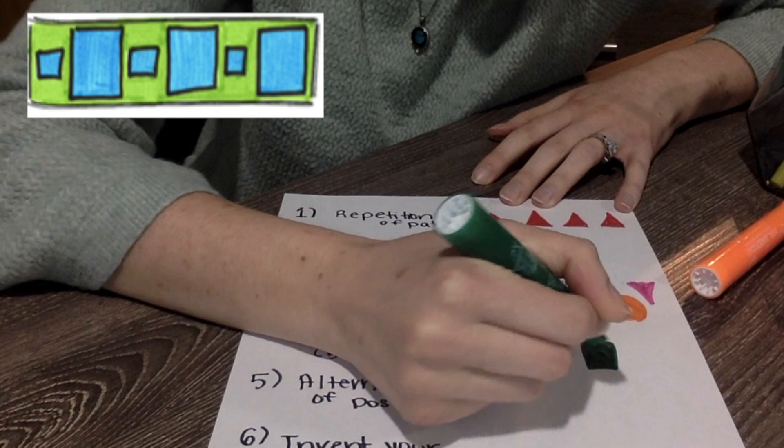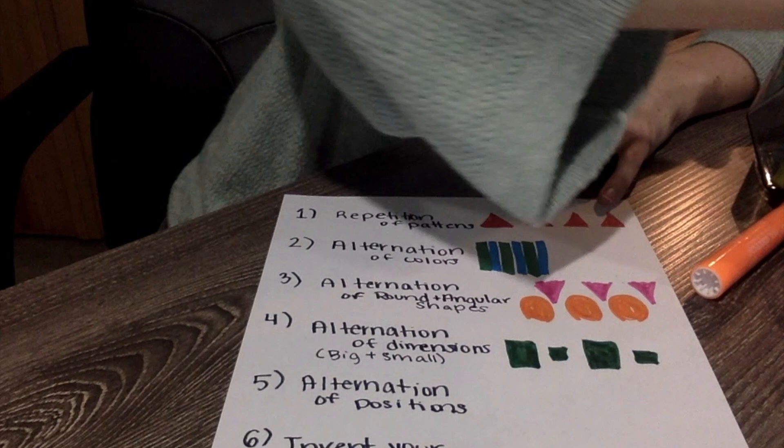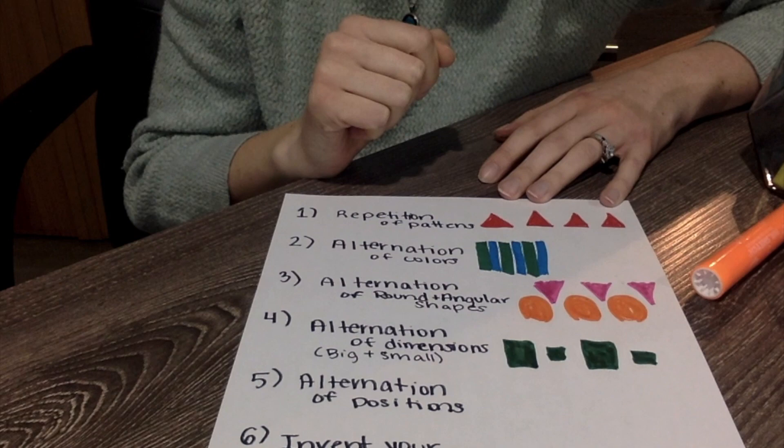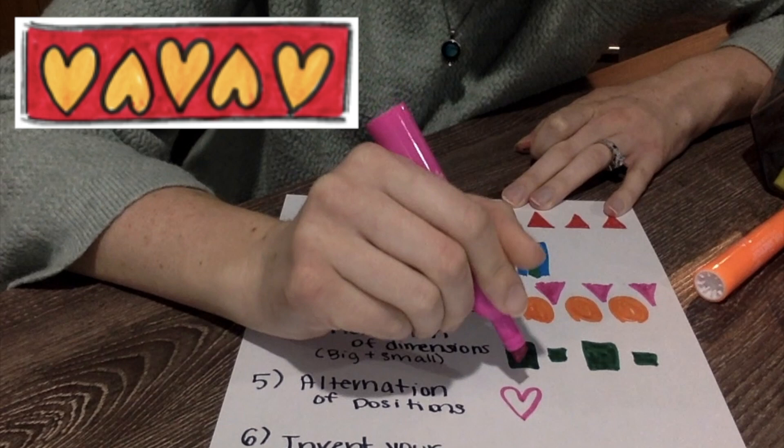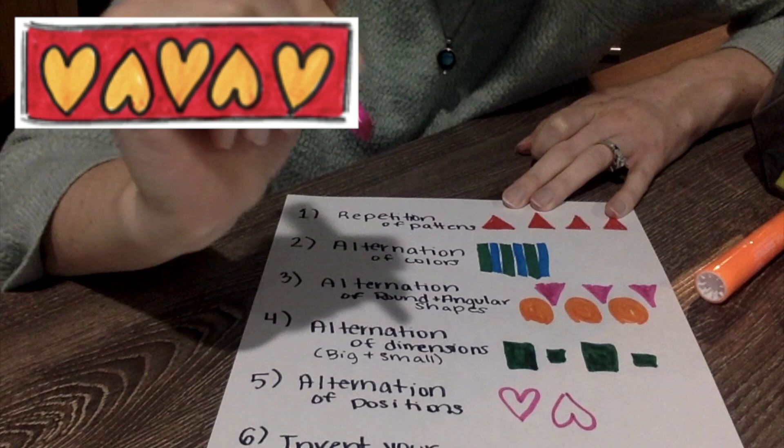Now for this next one it says to do the alternation of position. So if you make a heart or it could be a triangle too, I'm going to make this heart the right way and then I'm going to make a heart that's upside down.